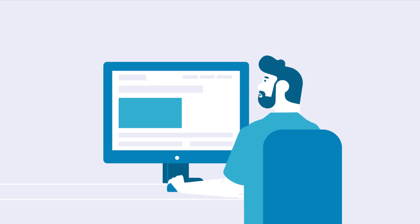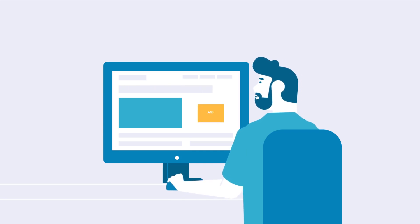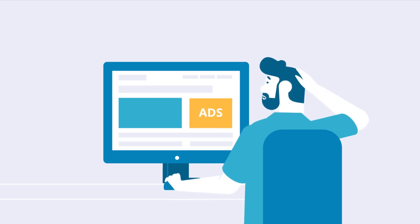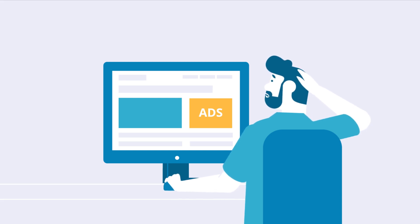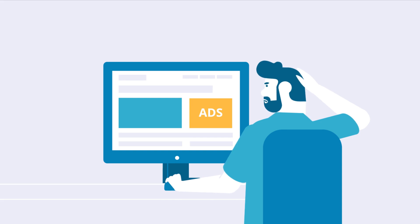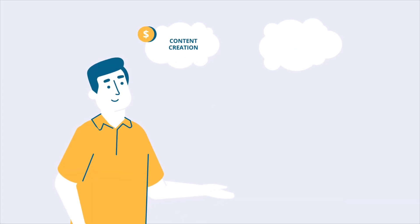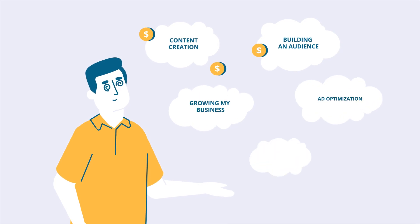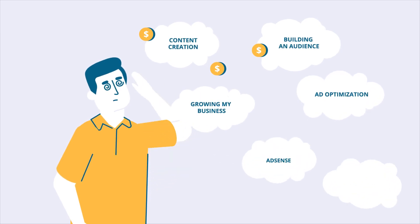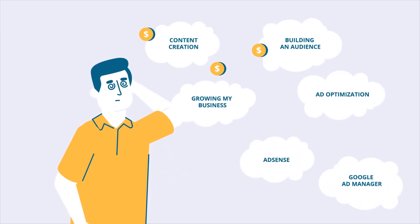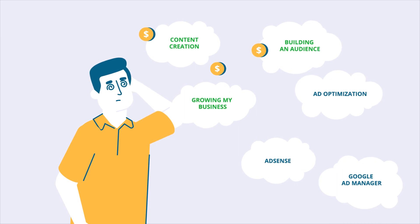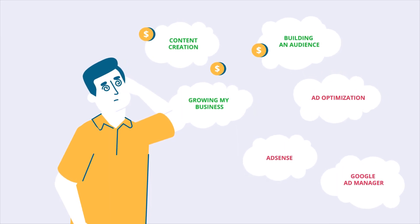Have you tried everything to optimize your AdSense ads but can't seem to increase your RPMs? Maybe you've been able to set up Google Ad Manager, but your optimization efforts aren't very successful. Most publishers struggle with ad optimization. They are great at creating content, building out their sites, and bringing in an audience — but when it comes to ad optimization, not so much.